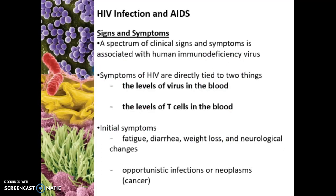HIV infection and AIDS really represent a very broad spectrum of clinical signs and symptoms. Initially, the symptoms of HIV are directly tied to two things: the level of virus in the blood and then the levels of T cells in the blood. There usually isn't a lot of free-floating virus because once it gets in, it gets into the T cell and stays there. Eventually those T cell numbers are quite high, but as the virus kills off the T cells, the T cell number then decreases.